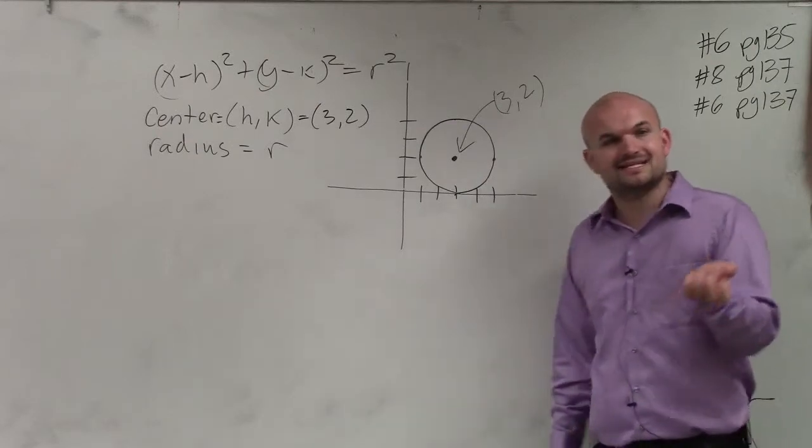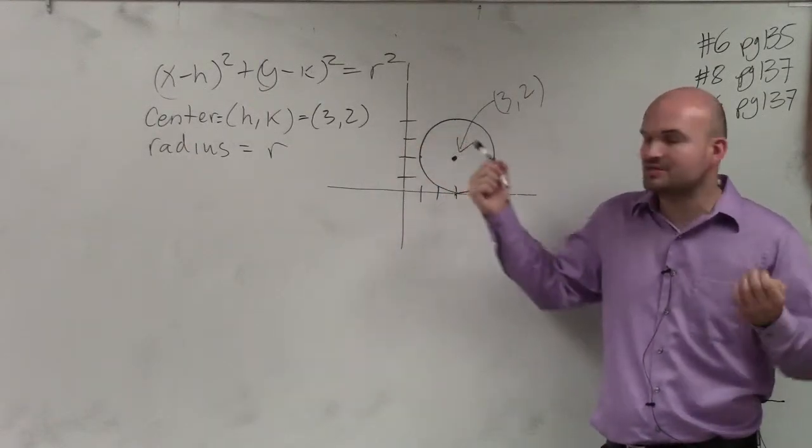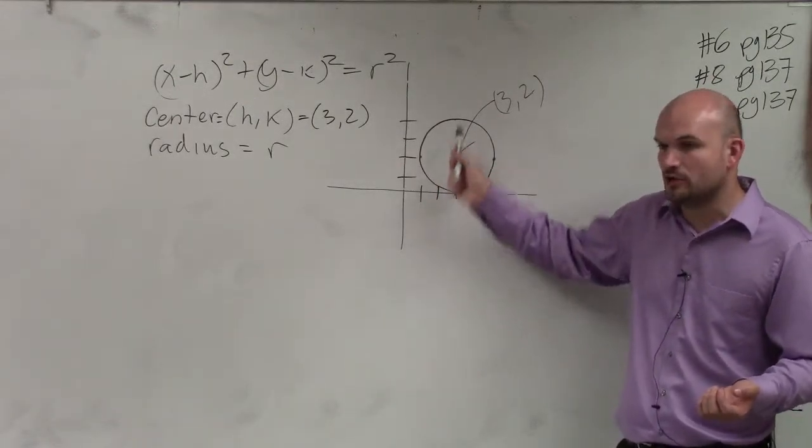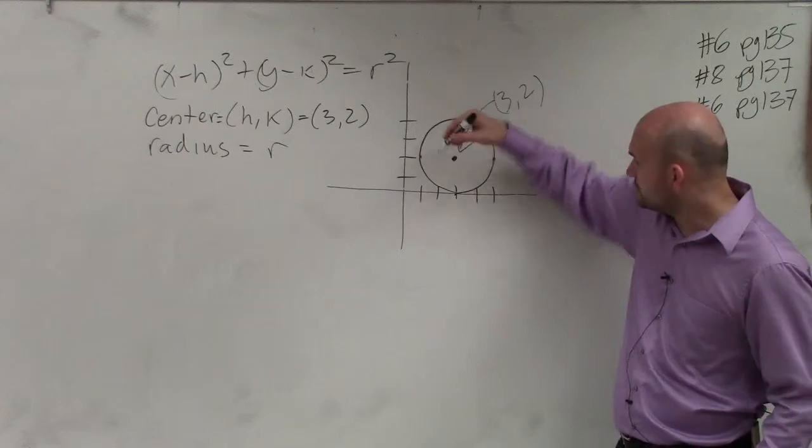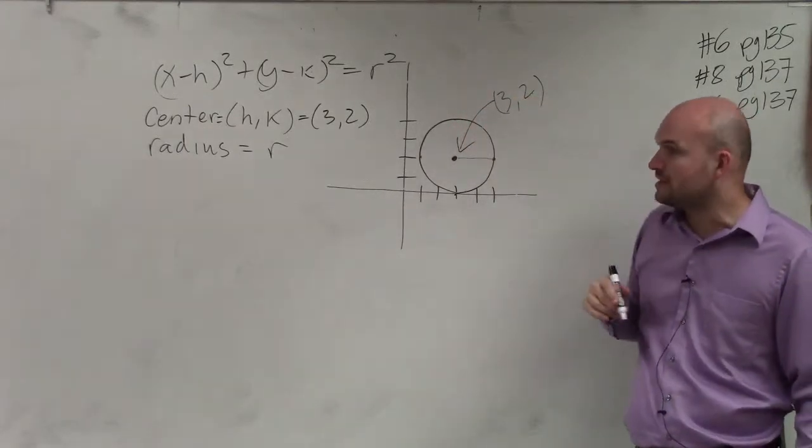Then, remember the radius is the distance from the center to any point of the circle. Well, to find the center or to find the radius, I'm probably going to pick, I'd like to do horizontal or vertical distances. And so from the center to the outside is the length of 2.